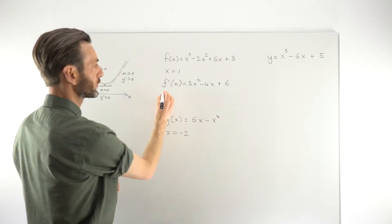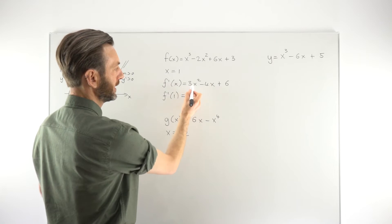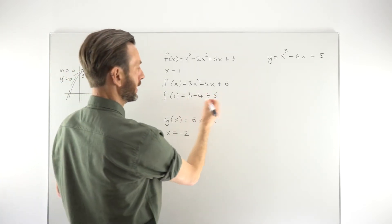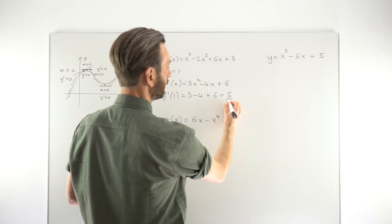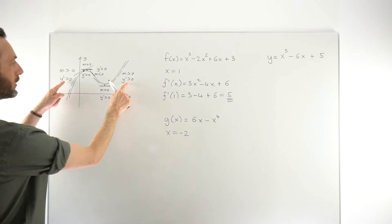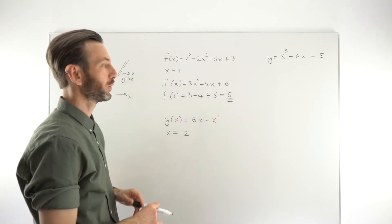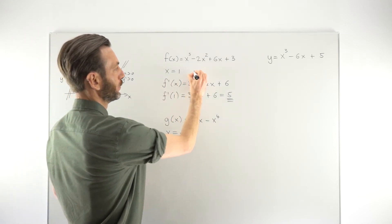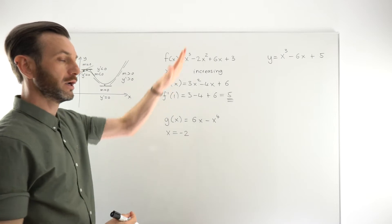To determine that, we substitute x = 1 into the derivative: f′(1) = 3(1)² − 4(1) + 6 = 3 − 4 + 6 = 5. We're not particularly interested in the number itself — what matters is that 5 is greater than zero, i.e., it's a positive number. So the gradient of the tangent line is sloping up at that point, meaning at x = 1, the function is increasing — the y values around that point are going up rather than down.